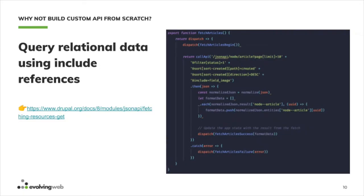The question with JSON API is that out of the box it will not give you the relation data. For example, if you have a content type with an image field that references a file entity, JSON API will not give it to you right away. You need to use the include reference — for example, include field_image — and JSON API will return the object of the node and the object of the image. After that you will need to normalize it yourself, manipulating the data the way you want so that you can display it on the app.